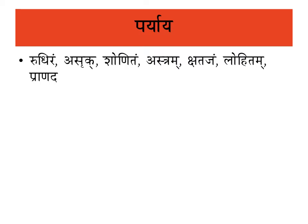Now, Paryaya of Rakta Dhatu. First: Rudiram, Ashruk, Shonitam, Astram, Chhatajam, Lohitam, Pranada. Shonit and Lohit indicate the red color of Rakta Dhatu — यहाँ Rakta Dhatu के लाल वर्ण को दर्शाते हैं।